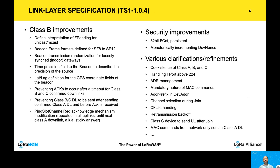If we look at what is new in 1.0.4, we see a number of improvements on class B, most notably being able to support indoor gateways. Normally, gateways in order to support class B need to synchronize with GPS and need to have GPS reception. What we did, in order to support indoor gateways, was provide a way to randomize loosely synchronized beacons so that multiple indoor gateways transmitting at the same time would not create interference with each other. That opened the door for supporting class B even through indoor gateways.